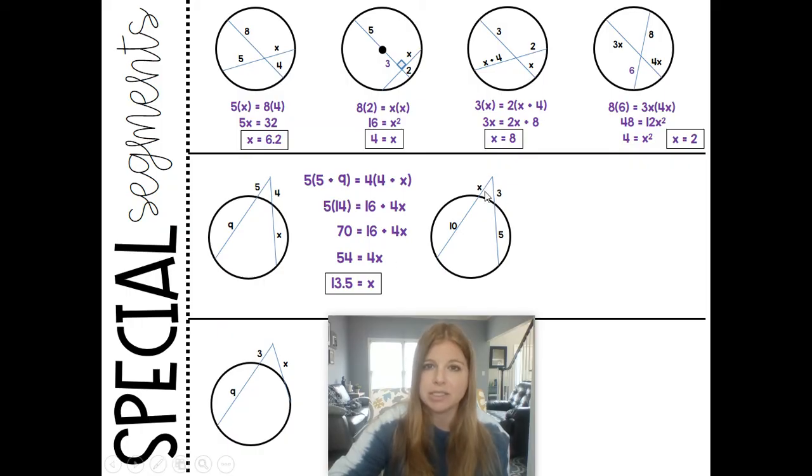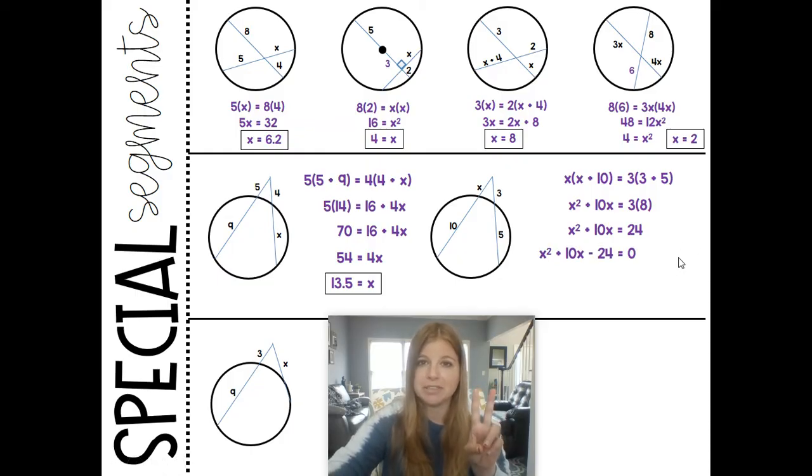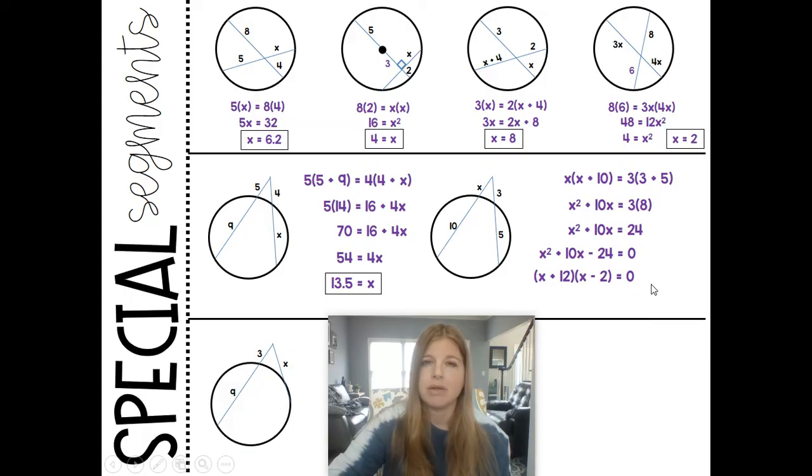Let's do the same thing here. So it's the external times the entire length. So X times X plus 10 is equal to 3 times 3 plus 5. Distribute that out. We then have X squared plus 10X equals 3 times 8, which is 24. Got a polynomial equation here, guys. So remember, first step in solving a polynomial equation, this is from algebra 1. Set the equation equal to 0. Step 2, factor. This is a trinomial. Think about what factor pairs multiply to get negative 24 and then add up to get 10. It's not 4 and 6. It's 12 and negative 2. Then remember, you got two solutions. X plus 12 would get you negative 12 as an answer. X minus 2 would give you positive 2 as an answer. But I'm going to box the positive 2 because think about it. You can't have a negative length. So negative 12 actually isn't part of the answer. It's just 2.